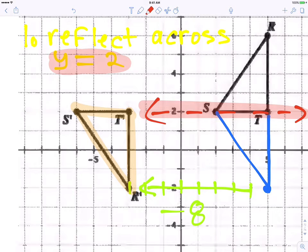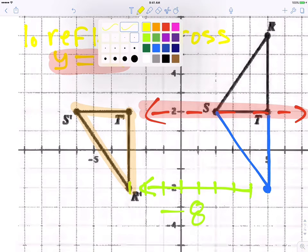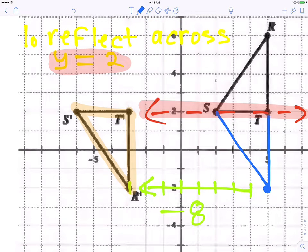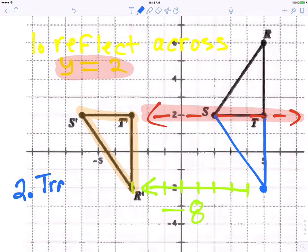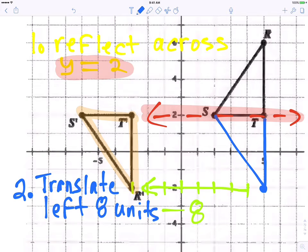Now the second type of transformation. Where it's moved left. Another way of saying that you translate left eight units would be this.